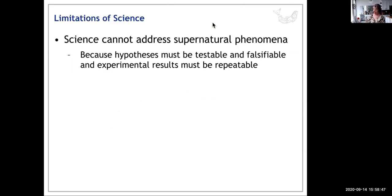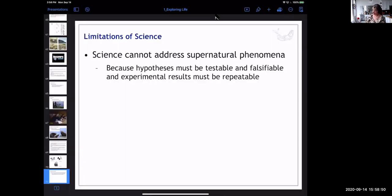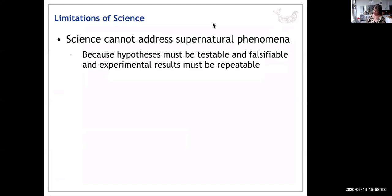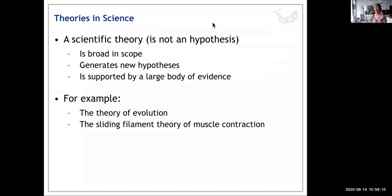Science cannot address supernatural phenomena because hypotheses must be testable and falsifiable and repeatable. That's very important when designing any kind of experiment. There's one term in particular—theory—that I'd like to talk about. A person who's not a scientist or biologist might say a theory is the same as a hypothesis or a guess, but it is not. A theory is broad in scope; it's supported by a lot of evidence and generates hypotheses. For example, the theory of evolution is one, and the sliding filament theory of muscle contraction is another.